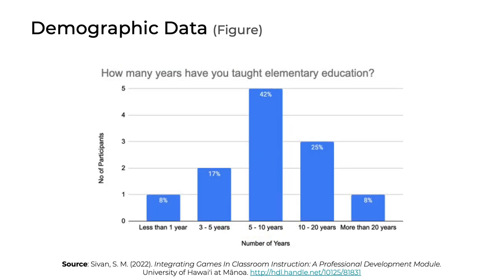Sometimes you might want to use a bar chart to display demographic data. In this example, we can see how many years participants have taught elementary education. The y-axis represents the number of participants, and the x-axis has categories for number of years. The bar chart makes it easy to see that the tallest bar at 42 percent had 5 to 10 years of experience, and the next biggest group was 25 percent at 10 to 20 years. One critique is the absence of an overall sample size — anyone looking at this chart won't know how many participants 42 percent represents, so that information should ideally be included in the chart itself.